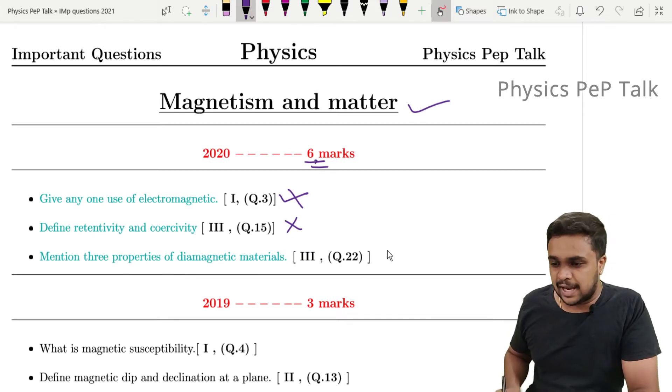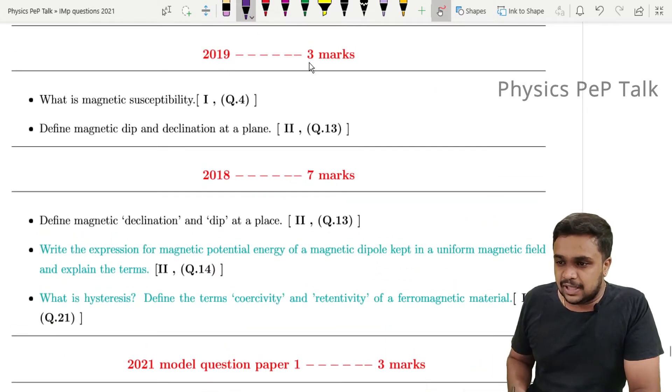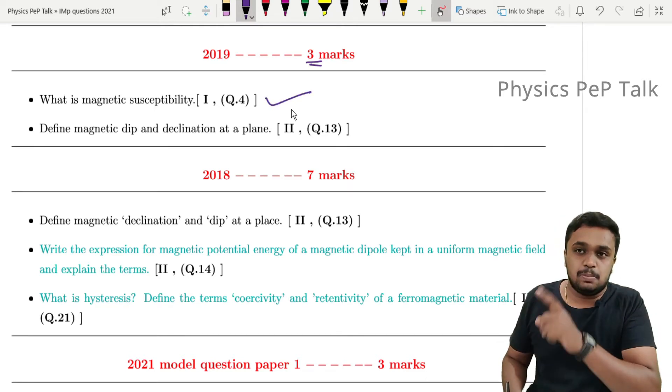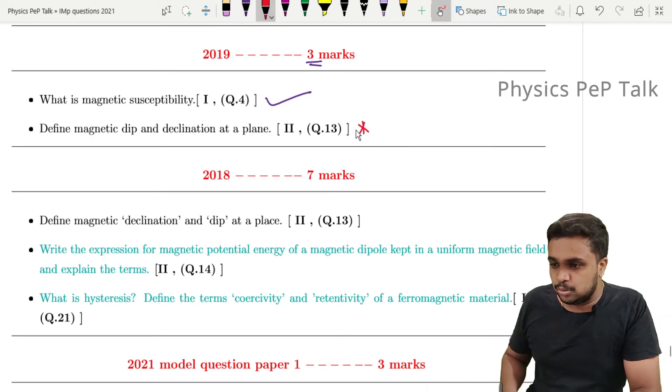In 2019, the chapter had 3 marks. 'Mention three properties of diamagnetic materials' - this is not in the current syllabus. 'What is magnetic susceptibility' - this definition is also not in the current version. However, 'Define magnetic dip and declination at a place' - this is very important.